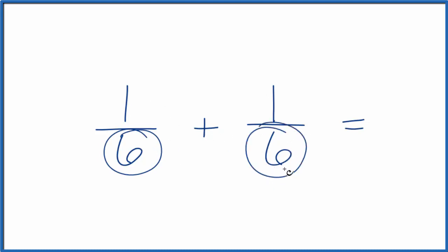We want the denominator to be the same. With one over six plus one over six, they're already the same. So that makes this quite a bit easier.